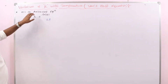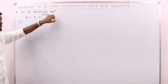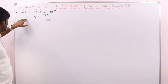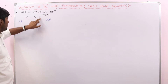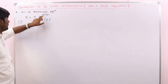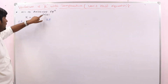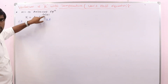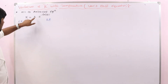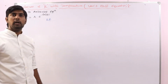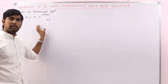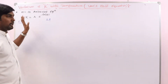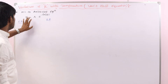According to the Arrhenius equation, rate constant k equals the frequency factor into exponential of minus Ea by RT, where Ea is the activation energy, A is the frequency factor, and k is the rate constant. We already made a video on the Arrhenius equation — you can refer to that if you have any doubts.